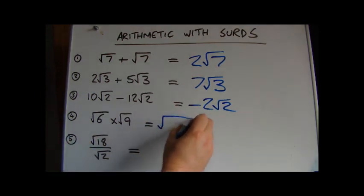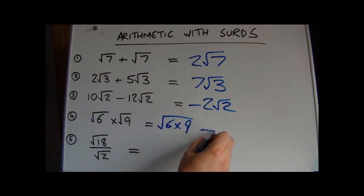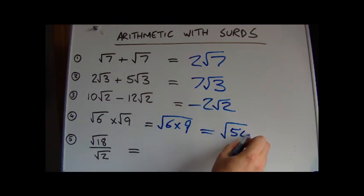root. So in this case, we can combine the 6 times 9 under a single root, and when we multiply those together, it gives us root 54.